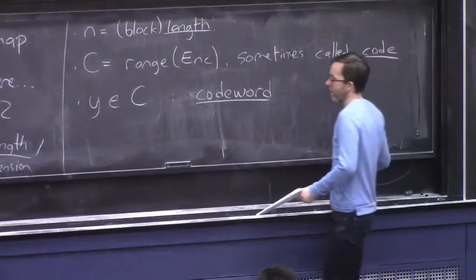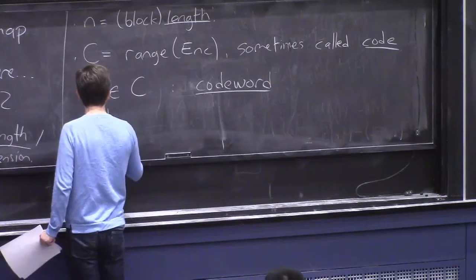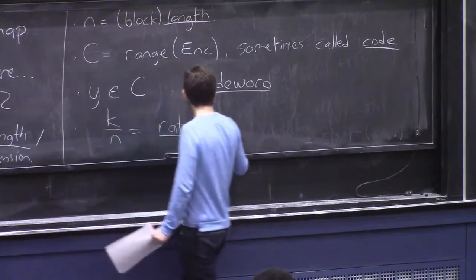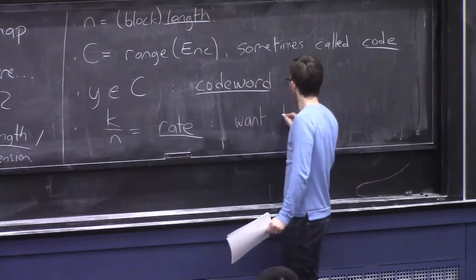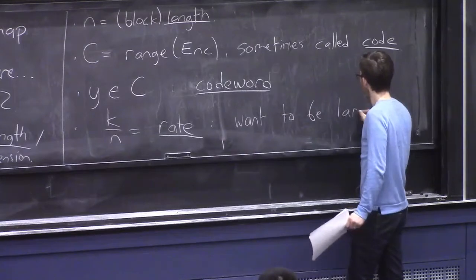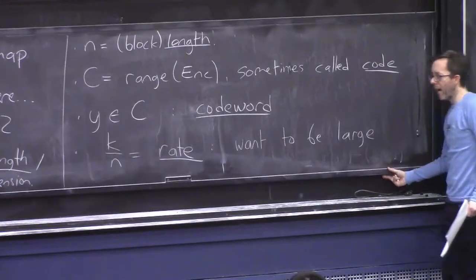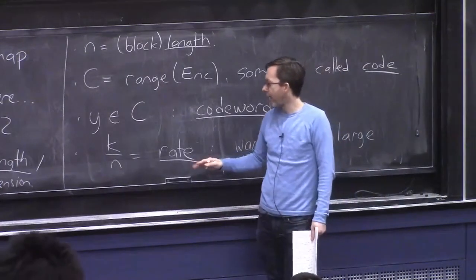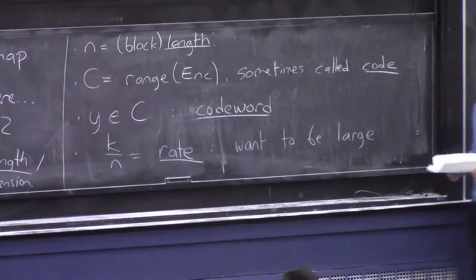And finally, there's some parameters associated to a code, one of which is K over N, which is called the rate of the code. And this is something that we want to be large. This will be some number that's between 0 and 1. And the smaller it is, the more redundancy you're adding. So ideally, K will be very close to N, so N will be not much bigger than K. So you're not adding too much redundancy, so it's efficient. And in that case, the rate will be close to 1.